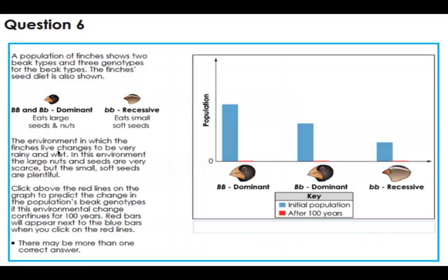The environment in which the finches live changes to be very rainy and wet. In this environment, the large nuts and seeds are very scarce, but the small soft seeds are plentiful. So who's that sound good for? Does it sound good for this bird or this bird? And if you're thinking this bird, you're right because he eats small soft seeds. So it sounds like the environment changed in a way that it's good to be this kind of bird in that new environment.